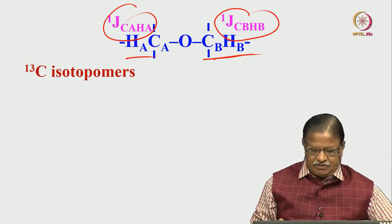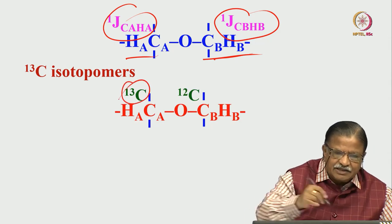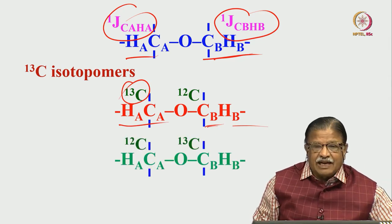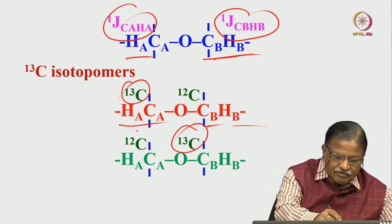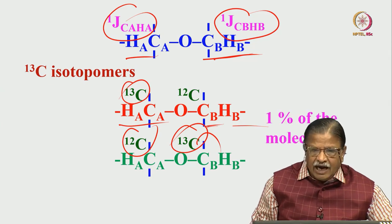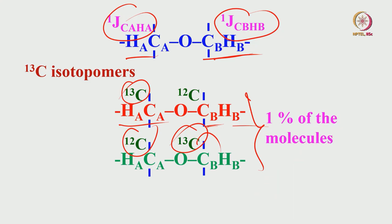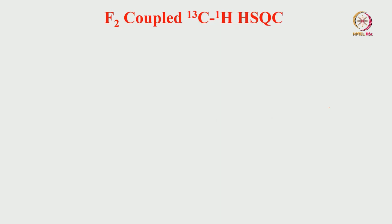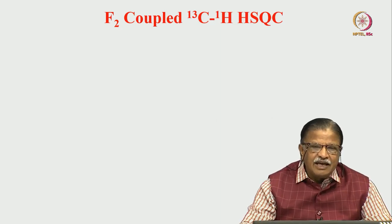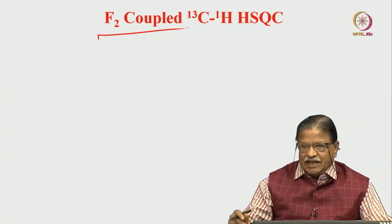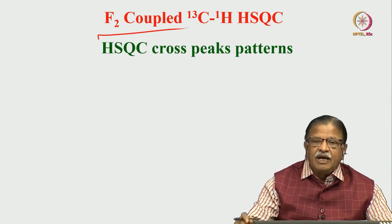We can think of two different isotopomers. In one, carbon A is in the carbon-13 state and carbon B is carbon-12 — only J coupling for A exists. In the other, carbon B is carbon-13 and carbon A is carbon-12 — one-bond carbon-proton coupling is seen. Each of these isotopomers is present in about 1% of the molecules. Let us see how the F2-coupled carbon-13 proton HSQC spectrum appears. The F1 dimension is the indirect (carbon) dimension; F2 is the detection (proton) dimension.